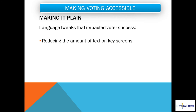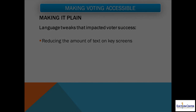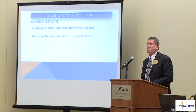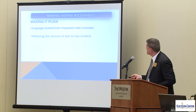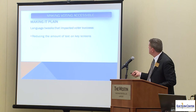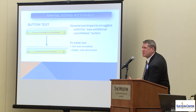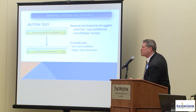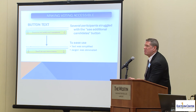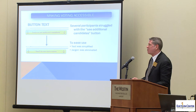I'm going to show you a couple of examples of things that were actually changed on some ballots where the language was tweaked, adding to the success of the voter in understanding what they were trying to do. That basically means reducing the amount of text on key screens. Here's one example: the top button originally said "touch to see additional candidates" — several people struggled with that. It was changed to "touch to see more names." The jargon was eliminated, the text was simplified, and that made it easier to navigate through that part of the ballot.